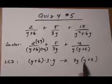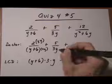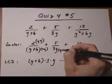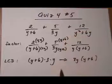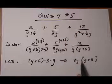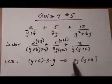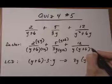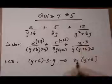3y, it's missing the y plus 6. So we're going to multiply y plus 6, top and bottom. And the last one, y, y plus 6 are already contained. We need a 3. So we're going to do times 3, top and bottom.